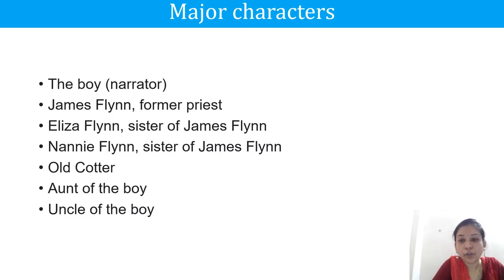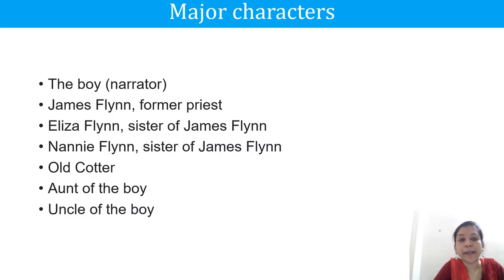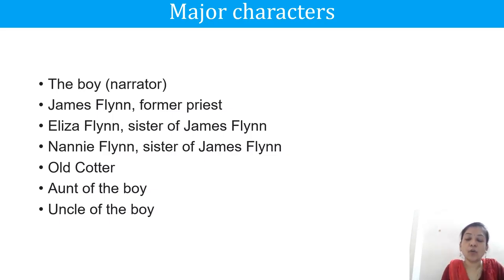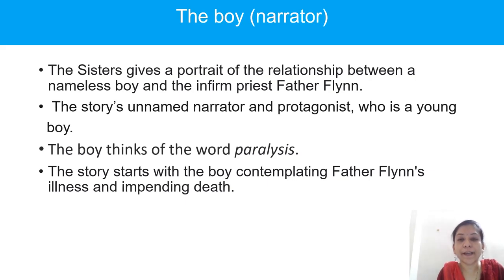Let us have a look at this slide. In this slide you will find all the important characters of our short story The Sisters by James Joyce. The first major character is the boy narrator, second is James Flynn, former priest, third is Elisa Flynn, sister of James Flynn, fourth is Nanny Flynn, sister of James Flynn, then Old Cotter, the aunt of the boy, and the uncle of the boy. Please note down all these characters in your register and one by one we will discuss them in detail.